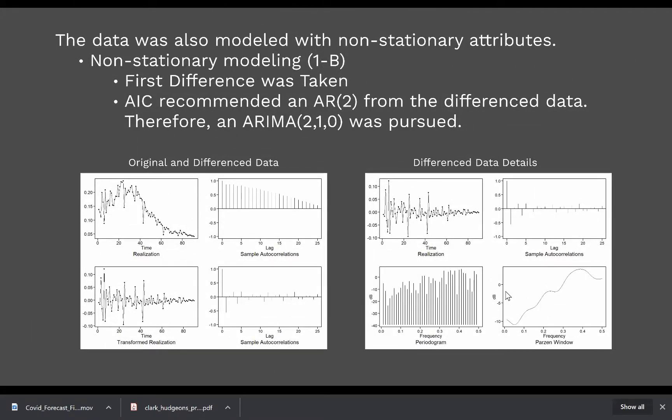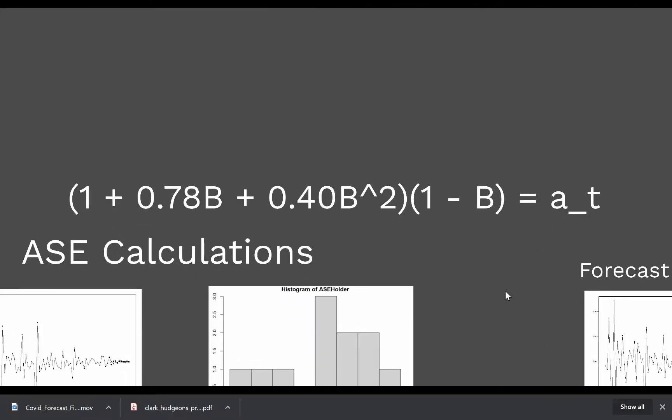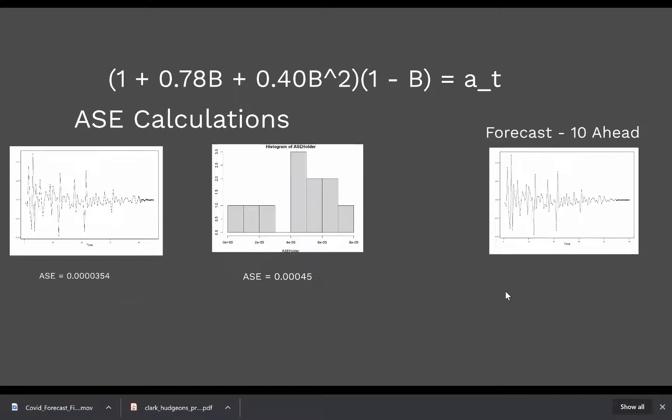We also put in a non-stationary 1 minus B component to account for the wandering. And the plot on the left shows the transformed realization, plot on the right shows details of that transformed realization and we ended up with an ARIMA 2,1,0. Here's a look at that model and the ASE calculations on that. The lowest ASE calculation that we got was 3.5 times 10 to the negative five, that was for right off the end of the model, but on a rolling window comes up at 4.5 times 10 to the negative fourth.